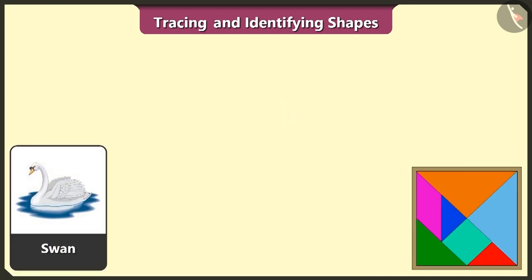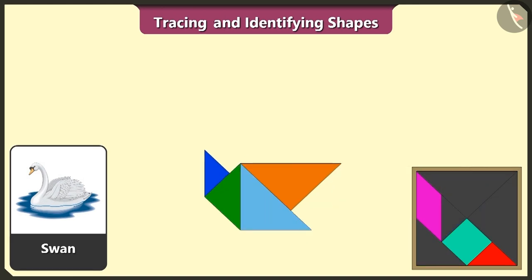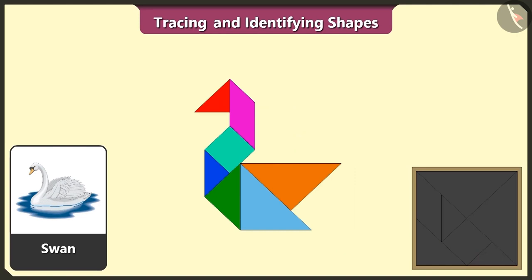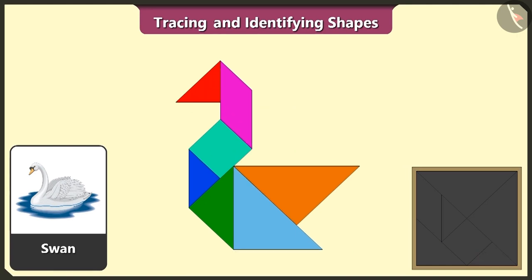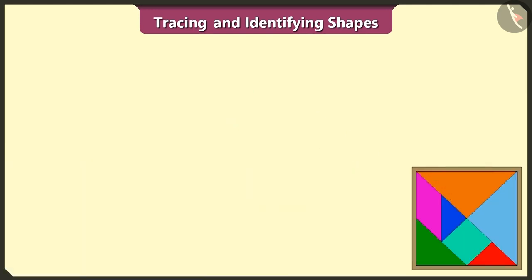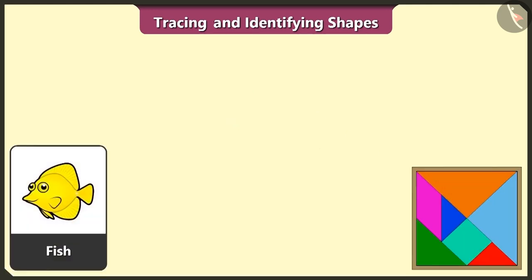This is a swan. Now we will make a swan using four triangles, one square, one quadrilateral, and one triangle. The swan is also ready — this is really interesting!